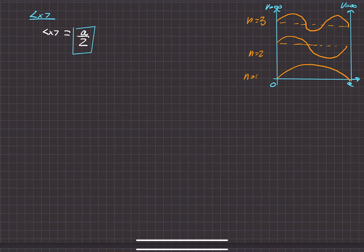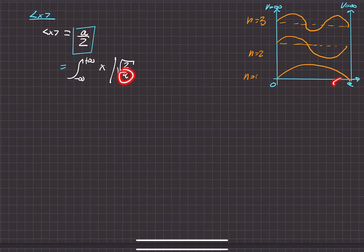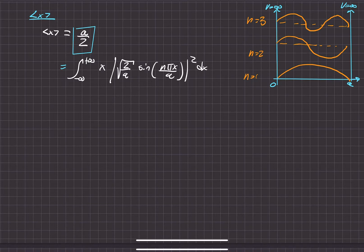You can also do this using the integral, and it's good practice. The expectation value is always the integral over all space, from negative infinity to positive infinity. The operator being evaluated goes in the middle, multiplied by the magnitude of the wave function squared. For the infinite square well, the wave function is the square root of 2 over A times sine of n pi x over A, modulus squared, with respect to x.